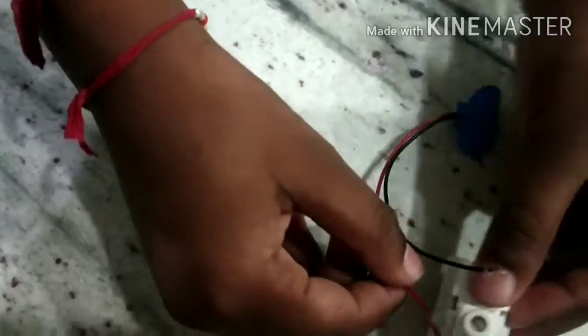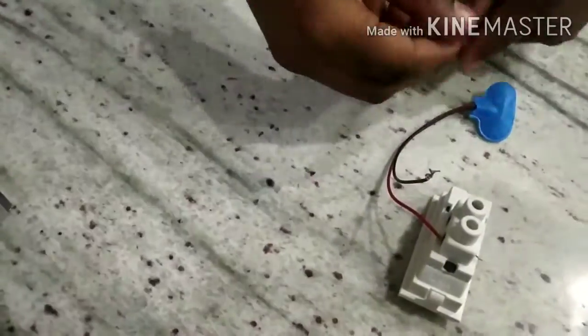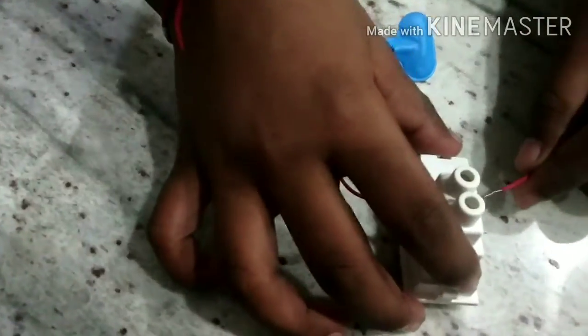Now see, I have fixed the extra positive wire of the 9 volt battery connector to one hole of the switch. Then take the extra positive wire and fix it to the other hole of the switch.